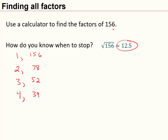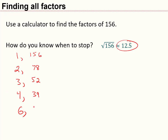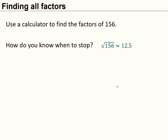Is 6 a factor? Since 156 is divisible by both 2 and 3, it must be divisible by 6; 156 divided by 6 is 26. Is 7 a factor? Using the trick: double the 6 to get 12, then 15 minus 12 equals 3 — not divisible by 7. Is 8 a factor? Dividing 8 into 156: 8 into 15 goes once with remainder 7, then 8 into 76 doesn't go evenly, so 8 is not a factor.